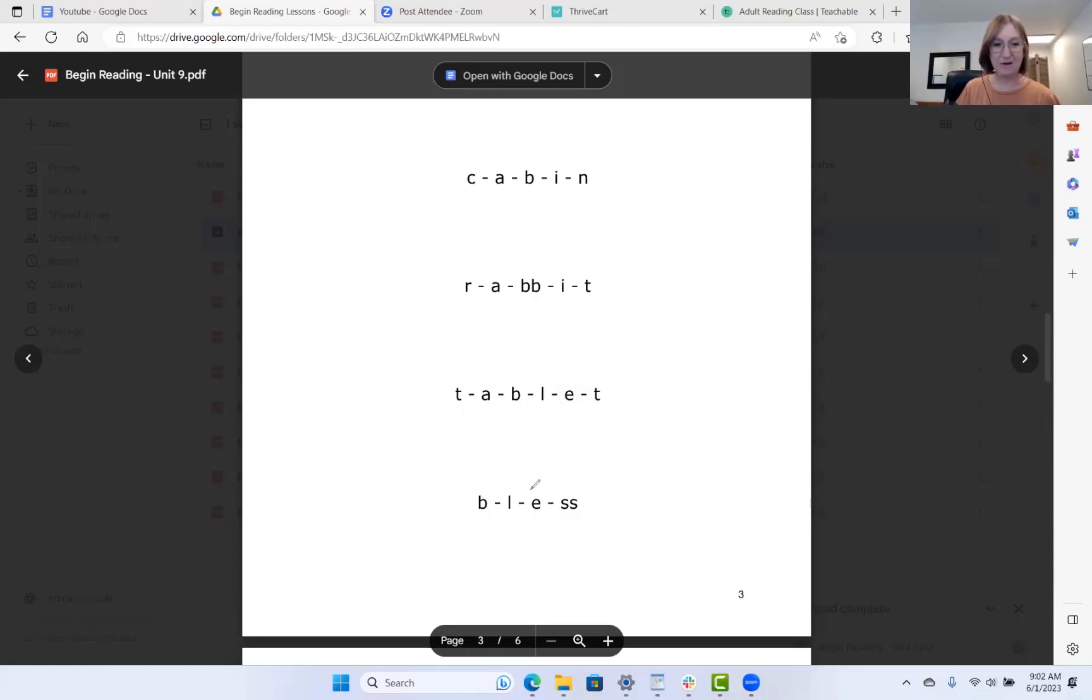All right, last one. Go ahead and work through it. Okay, so here our e is making it short sound because the next two letters are consonants. The short sound for e is e, e. When we pronounce the sounds, we have b, l, e, s. And when you combine the sounds, we have bless, bless, bless. Beautiful. Fantastic.